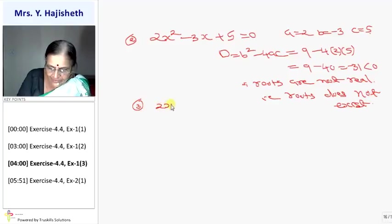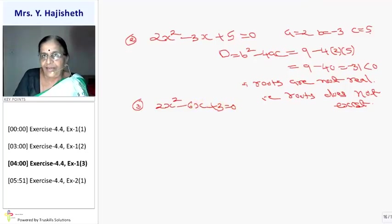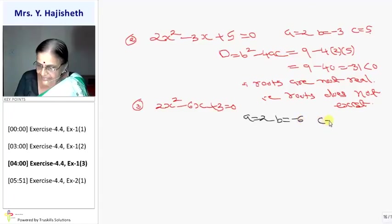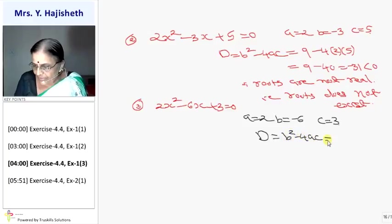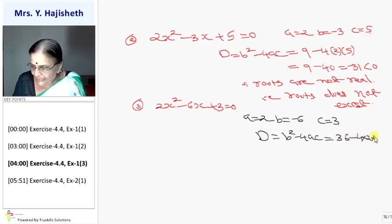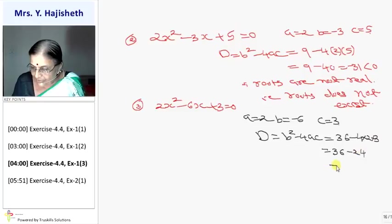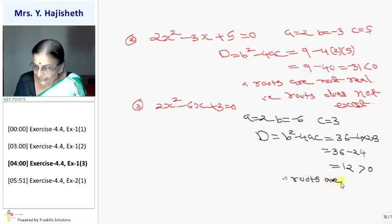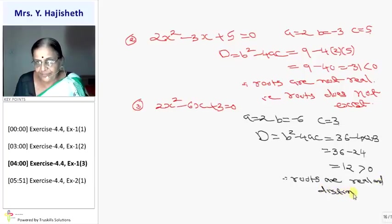Third equation: 2x² − 6x + 3 = 0. A is 2, B is minus 6, C is 3. D is B² − 4AC. So it is 6² = 36, minus 4×2×3 = 24. So D = 36 − 24 = 12. Since 12 is greater than 0, the roots are real and distinct.